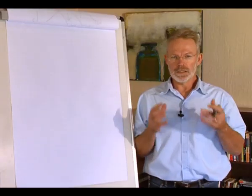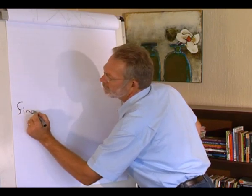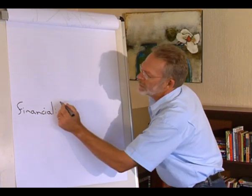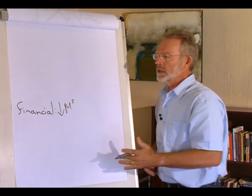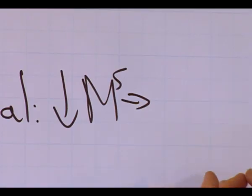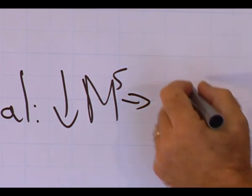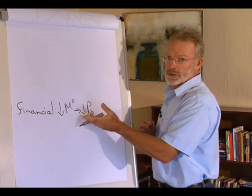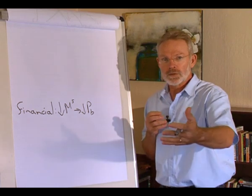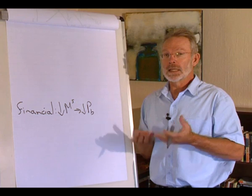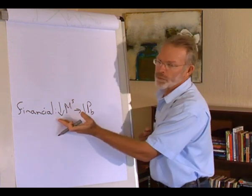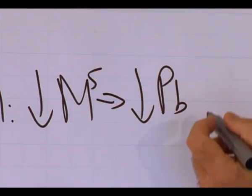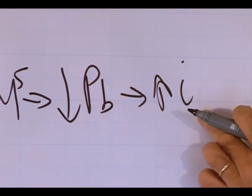A monetary contraction is a decrease in the money supply. The initial effect is in the financial sector. Central banks sell bonds; to convince market players to buy these bonds, they lower the price. Market players' bond holdings increase but they have less money, so the supply of money decreases. The decrease in the price of bonds leads to an increase in the interest rate.